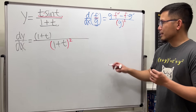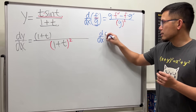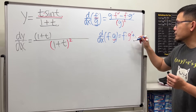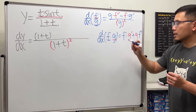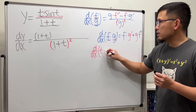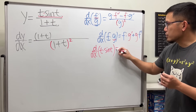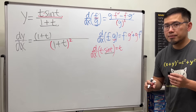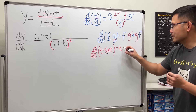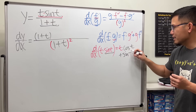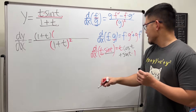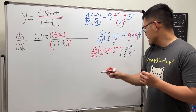The derivative of the top actually needs a product rule, so let's do it on the side. For the product rule, if we differentiate two functions f times g, it's the first function times the derivative of the second, plus the second function times the derivative of the first. We need to differentiate t times sine t. Keep the first function t, multiply by the derivative of the second — the derivative of sine t is cosine t — so we have t times cosine t. Then add the second function, sine t, times the derivative of the first, which is 1.